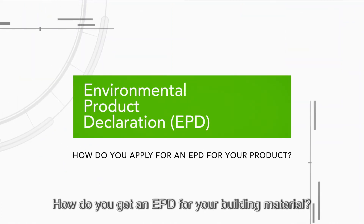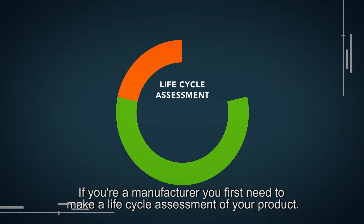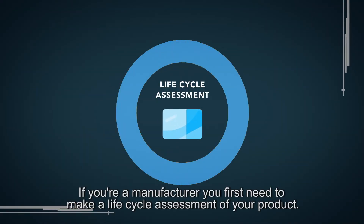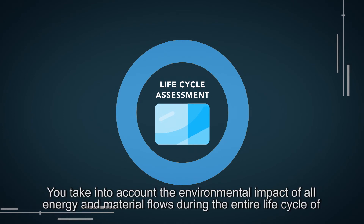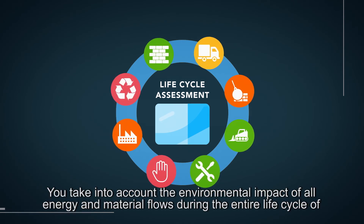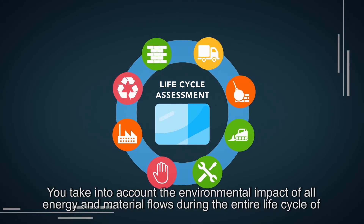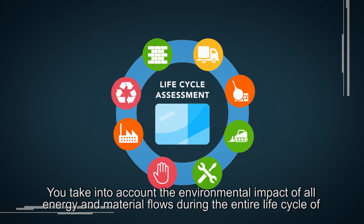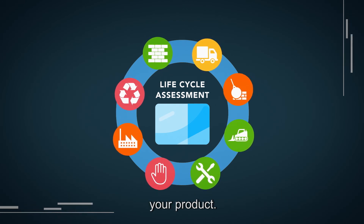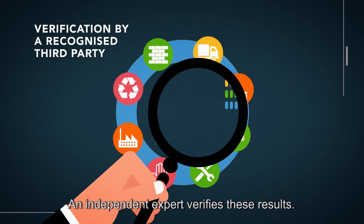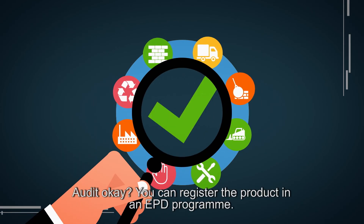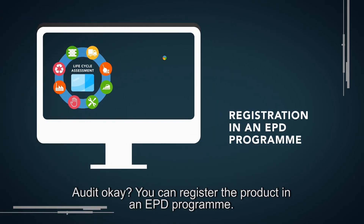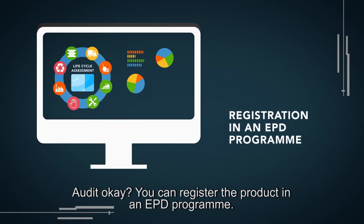How do you get an EPD for your building material? If you're a manufacturer, you first need to make a life cycle assessment of your product. You take into account the environmental impact of all energy and material flows during the entire life cycle of your product. An independent expert then verifies these results.